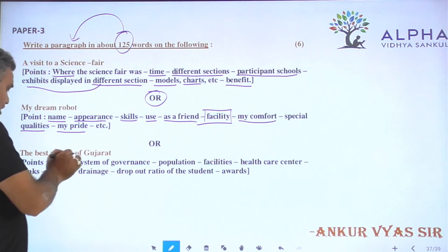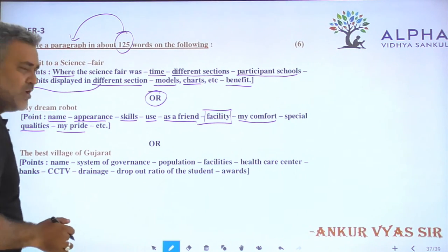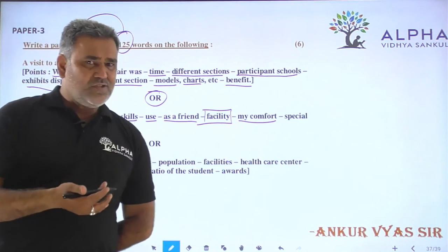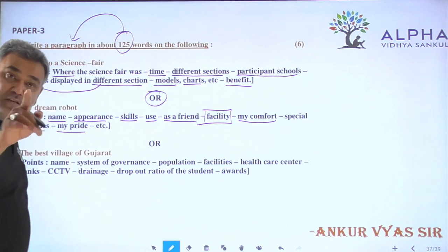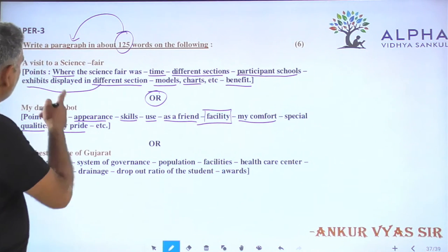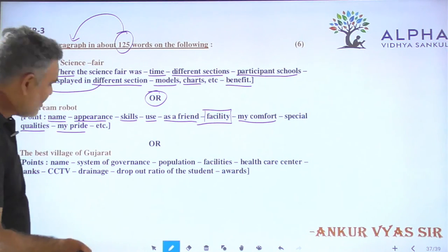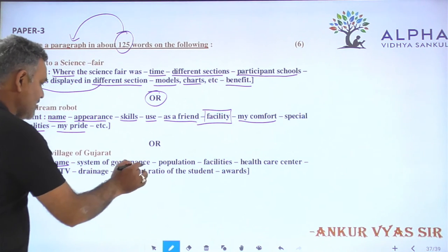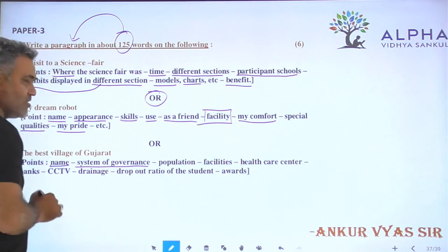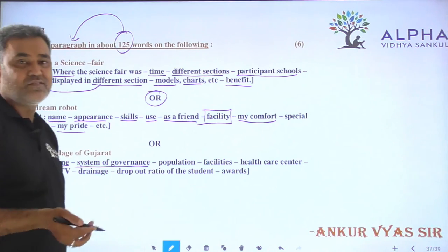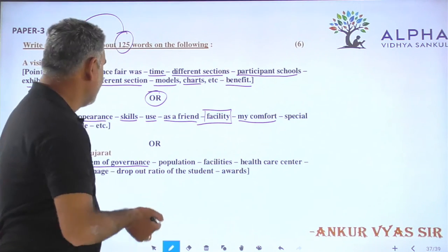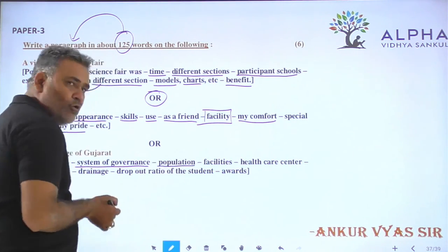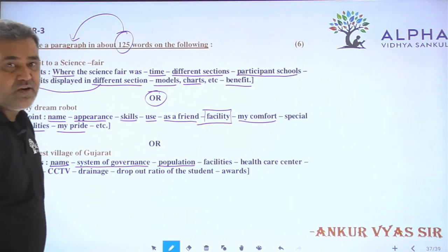The best village of Gujarat — Gujarat is the best village. If we go to the Gram level, we have a lot of people in the city. It's hard to say that the present tense has been written. If you visit the past tense, it's hard to write the name of the city. There is a governance system. There are a lot of people who work with the committee. The most population is the best of the population.